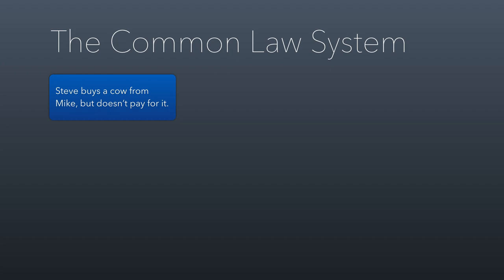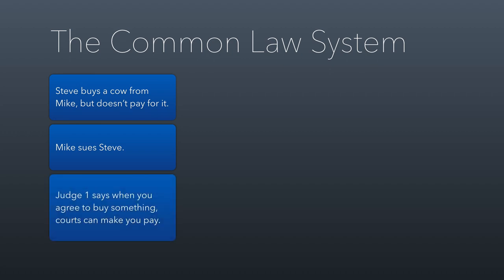Here's how common law works. Let's say Steve buys a cow from Mike but doesn't pay for it, so Mike sues Steve. The judge in that case will think about it and say, if you're going to agree to buy something, you should have to pay for it and courts can make you pay. This is where new law is created. Judges create law all the time in the United States — our legal system was actually designed that way. This law ideally becomes what's called a precedent, which means it creates a rule for future circumstances.